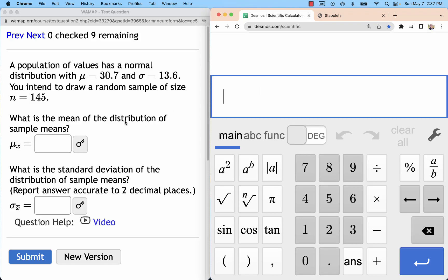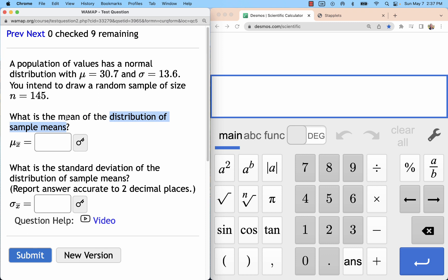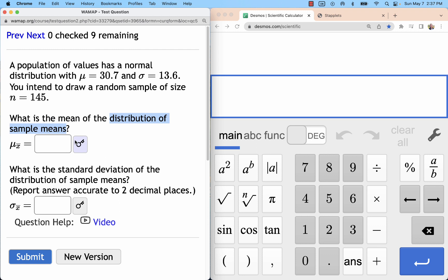The central limit theorem states that a distribution of sample means will have the same mean as the population mean. There's a lot going on in that sentence, but basically what we want to understand is